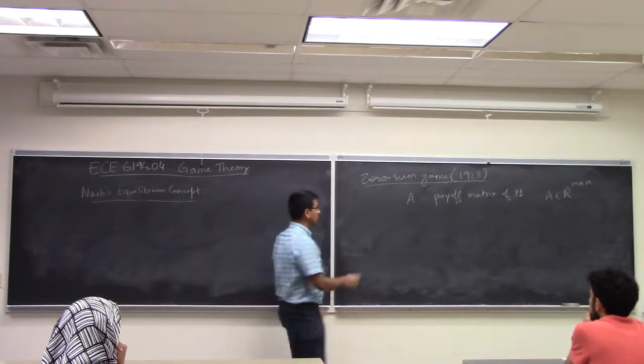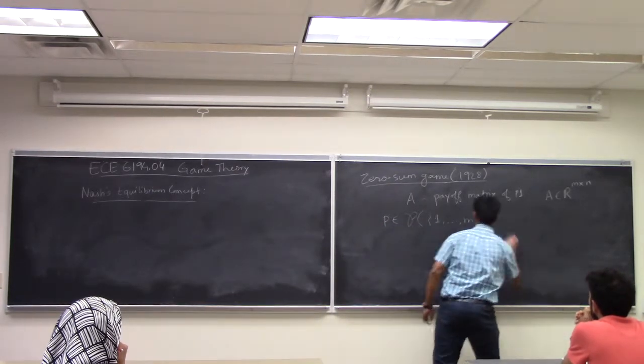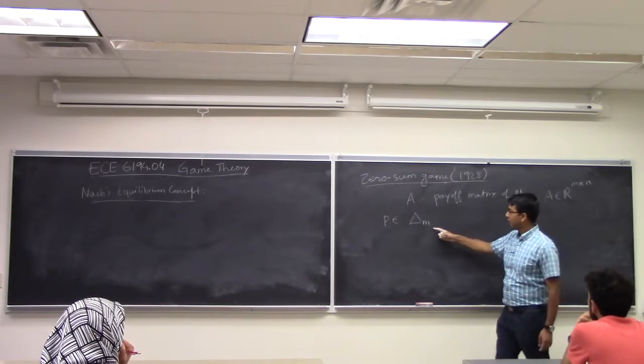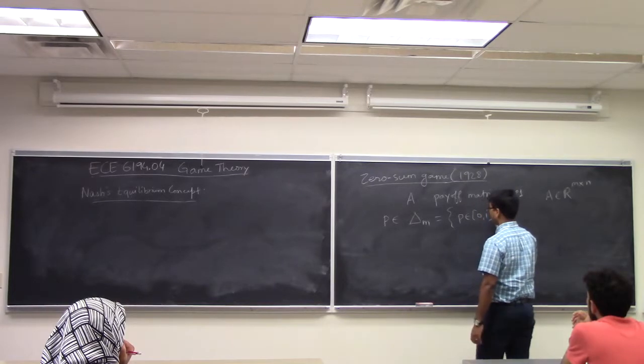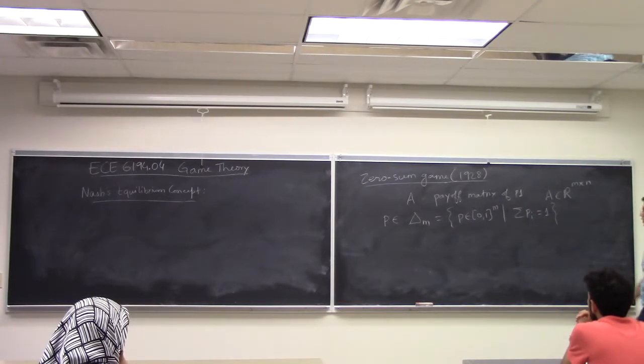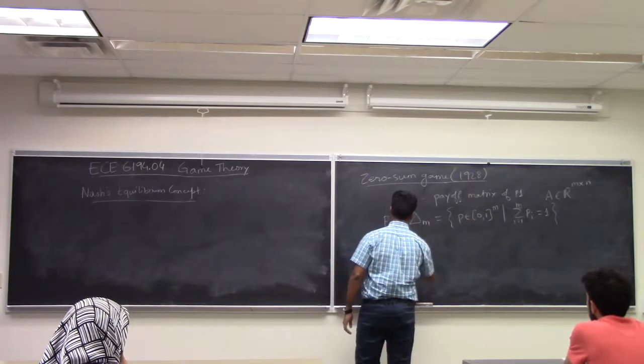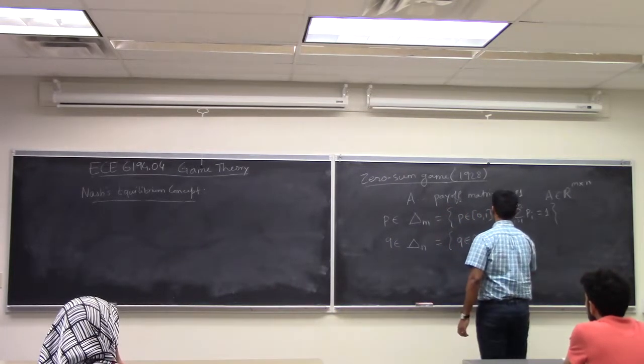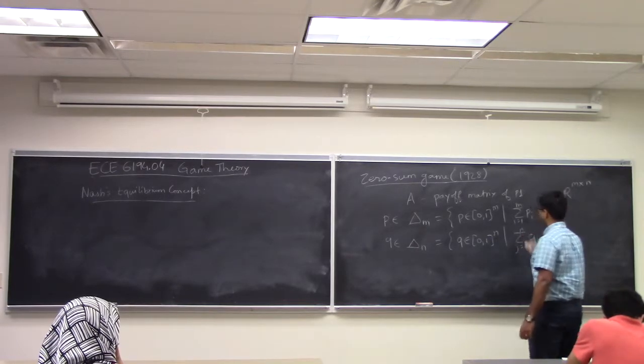So player 1 has the option of choosing a distribution P which lies in the simplex. So he has m actions, so he has the option of choosing a probability distribution over its m actions. So what is delta M defined as? P in 0, 1 raised to m such that summation of P i is equal to 1. This is a probability distribution, i equals 1 to m. And player 2 chooses a mixed strategy Q which is the set of probability distribution over the other person's action set.